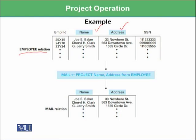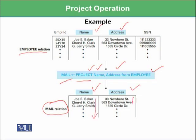We want to send mail to all employees, so we have made a new relation with the name 'mail'. Instead of writing 'select', we write 'project' and specify name and address — these are the two columns we are projecting from the employee relation into the mail relation. This selects all tuples but only the columns name and address, because we have not used any select operation here.